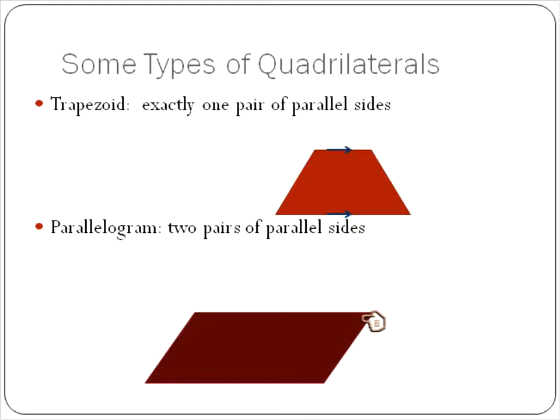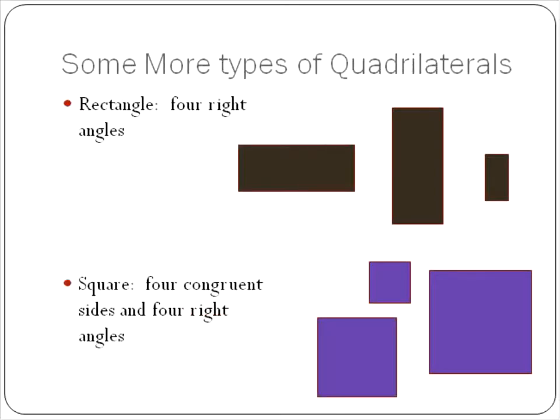A parallelogram has two sides of parallel lines. Both the top and bottom are parallel and also the two sides here are parallel. So opposite sides of a parallelogram are parallel. Makes sense.